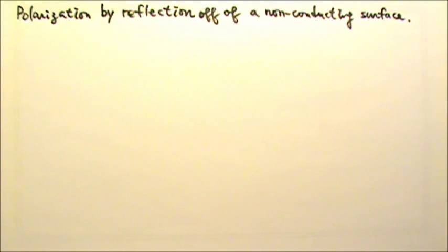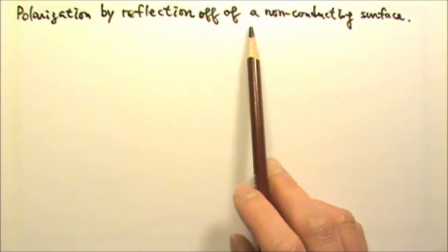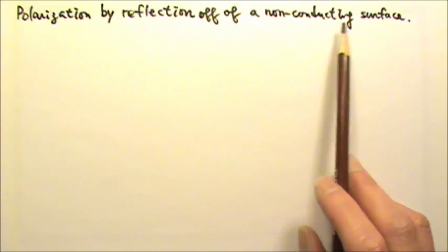In the last lesson, we discussed how a polarizer can be used to polarize light. In this lesson, we will take a look at the polarization by reflection off of a non-conducting, non-metal surface.